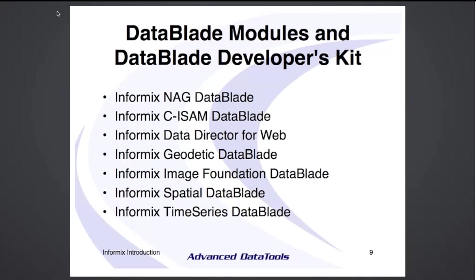In addition to being a database, Informix is extendable and there are a number of DataBlades that come with Informix — some are extra cost, some come with it. The two I'm most familiar with are the spatial and the time series. The spatial DataBlade adds four new data types: a geospatial point, a line, a shape (like a county, city, or building), and an image such as a satellite image. This lets you extend regular SQL with queries like 'show me all coffee shops within five miles of this point.' You can also build your own extensions.